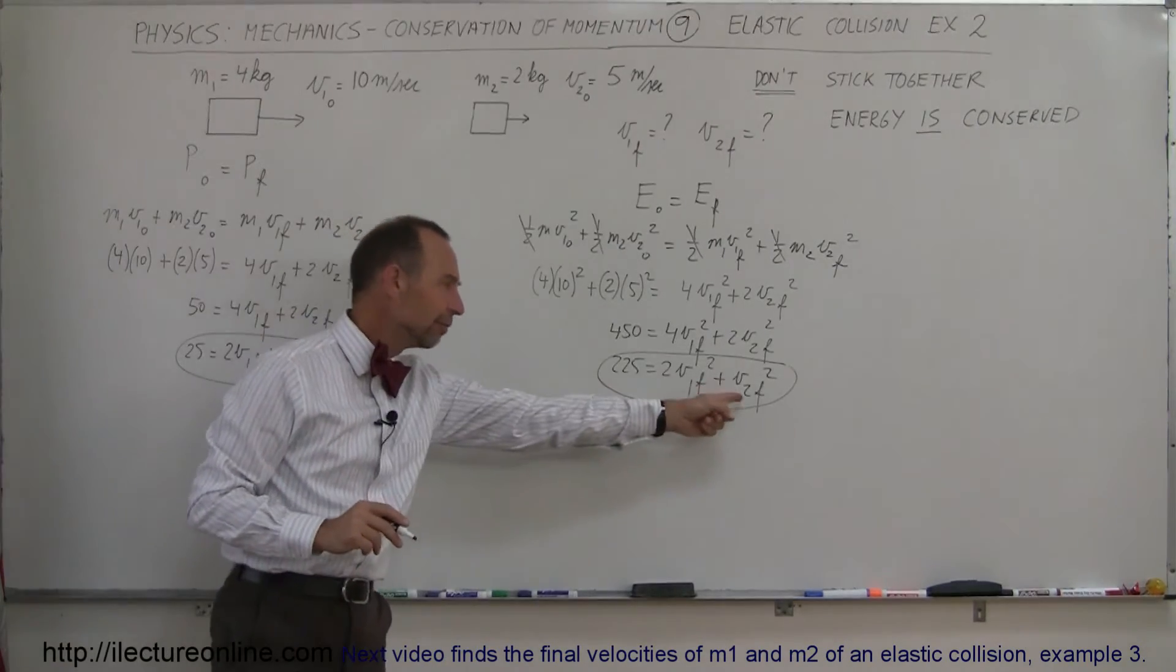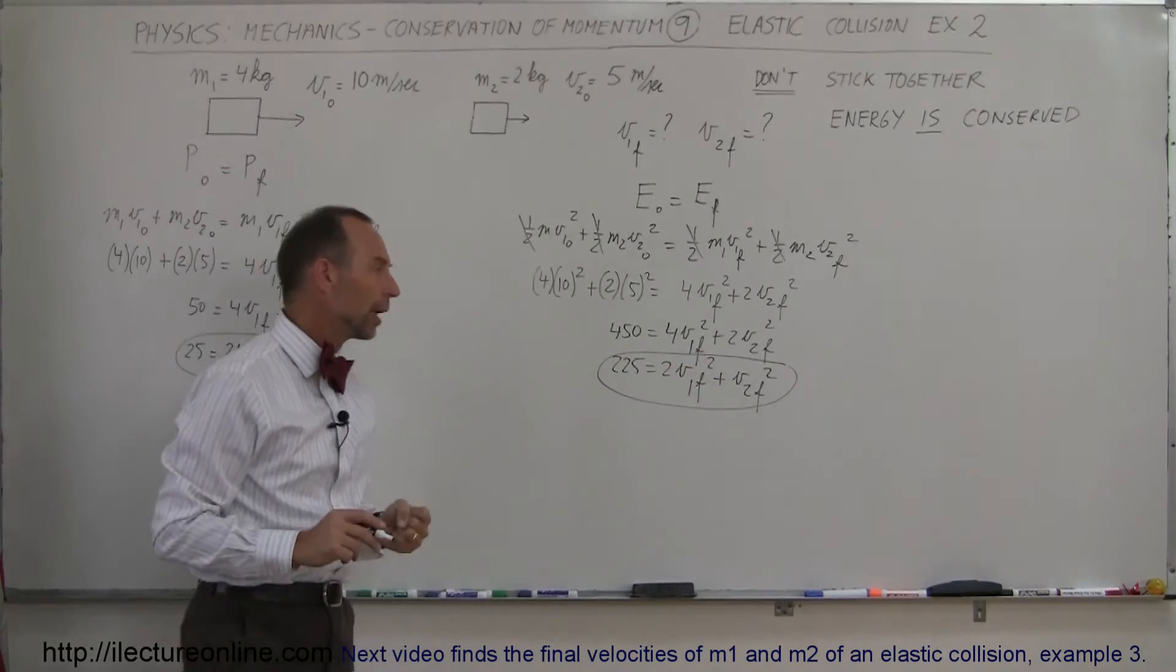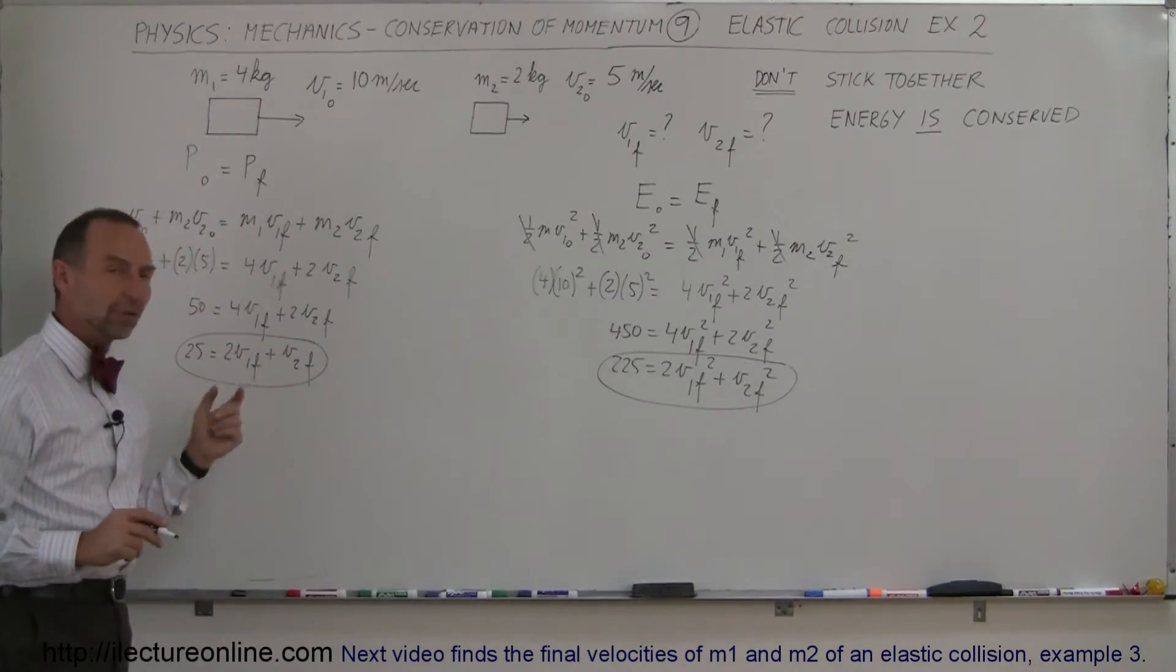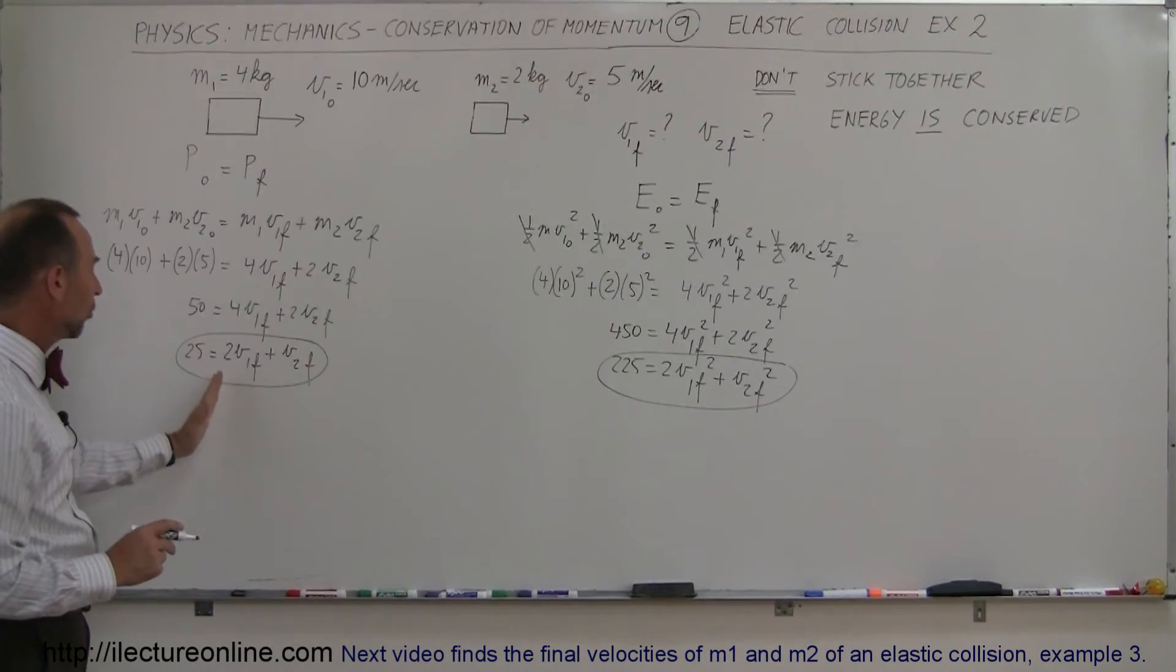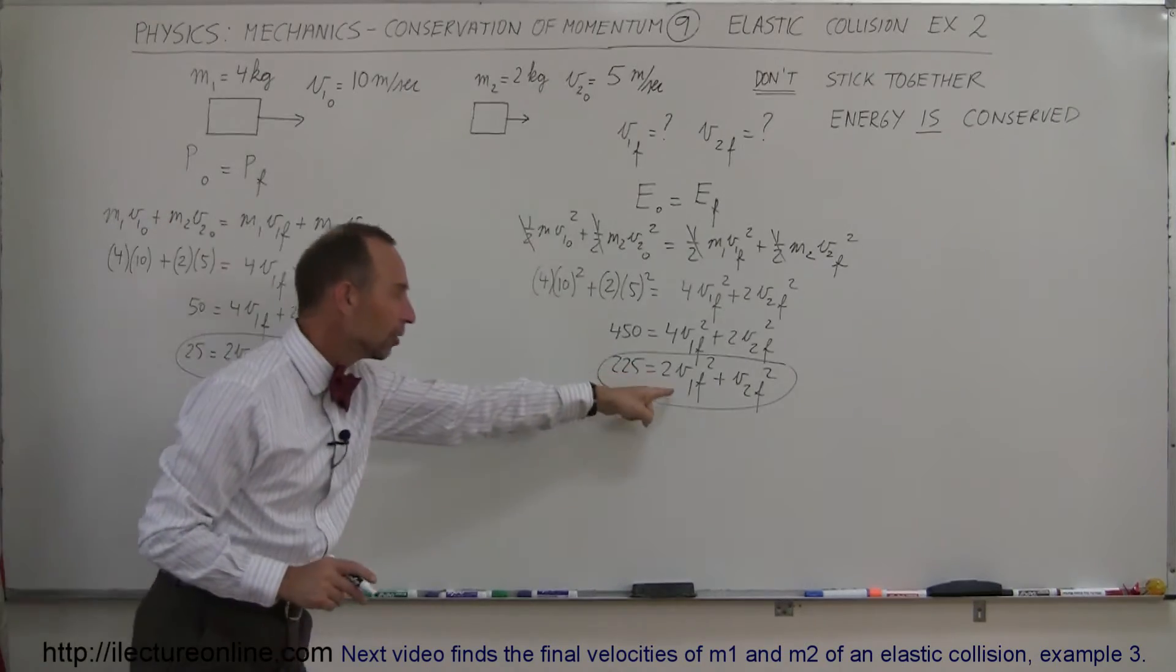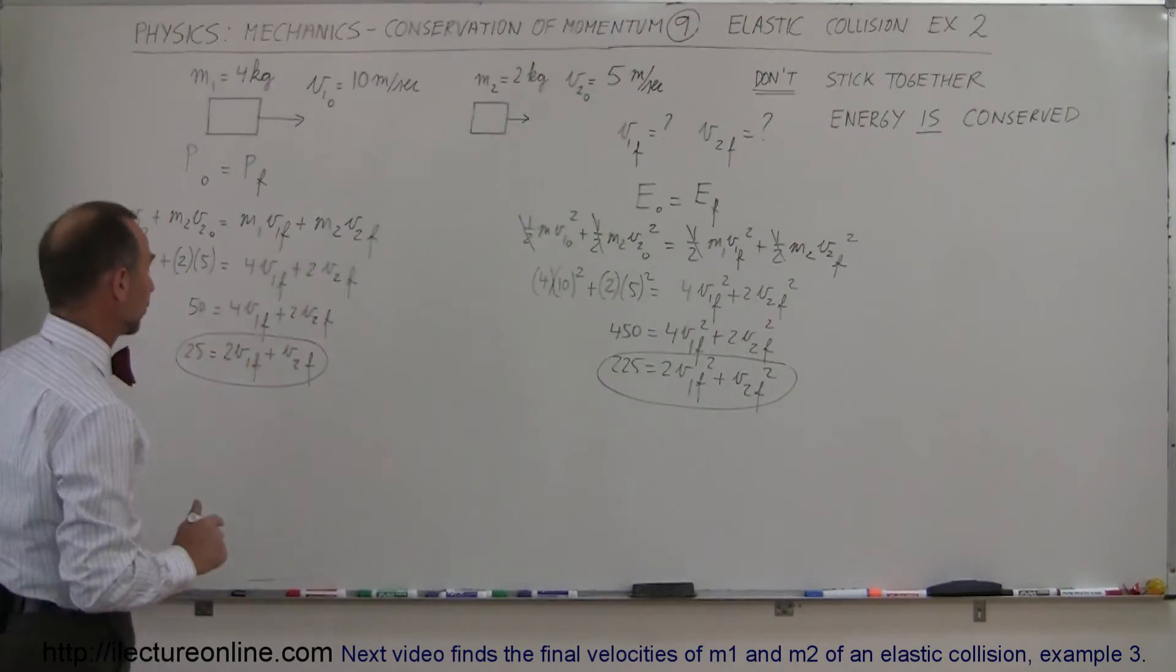Since this has the V1 and V2 finals squared, and this one does not to the first power, you want to solve this equation for one of the unknowns, and plug it into this equation to solve for the other unknowns. So let's do that.